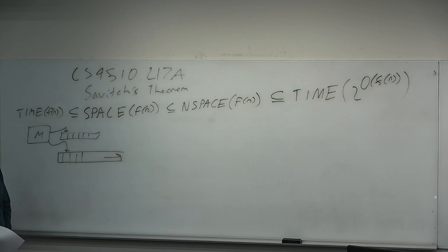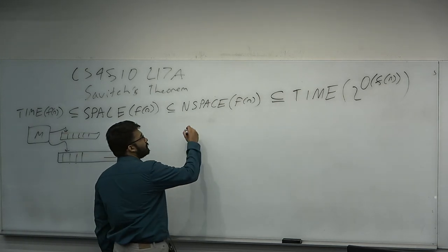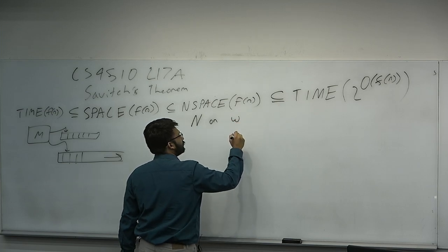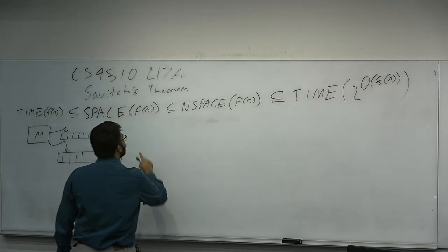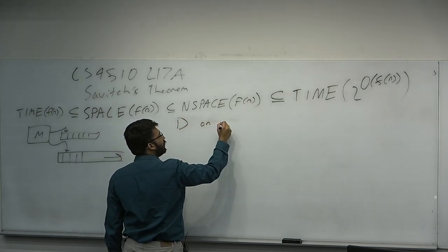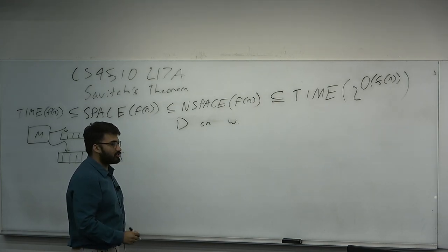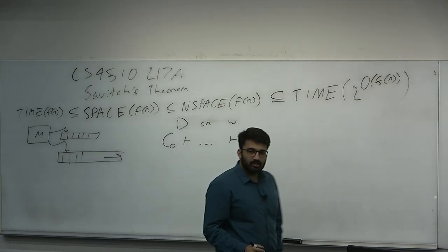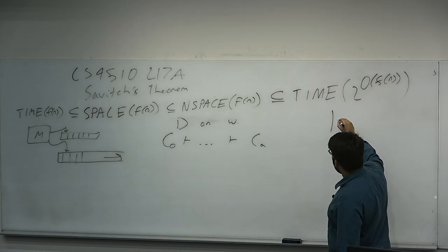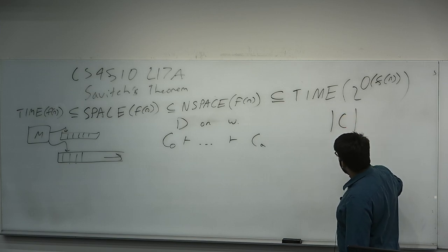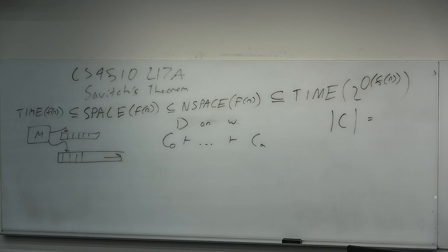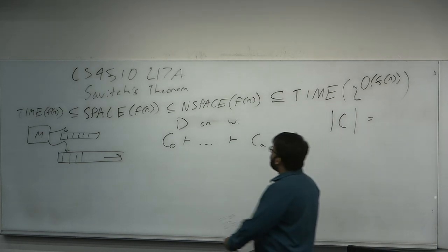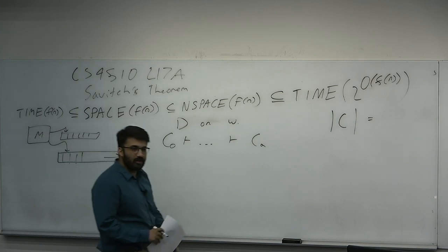Let's prove space(f(n)) ⊆ time(2^(O(f(n)))). Consider a deterministic Turing machine D on w. It follows a sequence of configurations C0, C1, ... until it reaches some accepting configuration. What is the size, as a string description, of a configuration of a deterministic Turing machine with a space bound f(n)? A configuration contains the tape head position, the contents of the tape, and so on. A machine with space bound f(n) means the configuration is going to be approximately size O(f(n)).